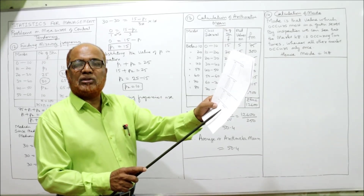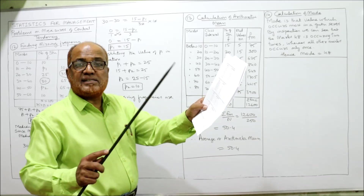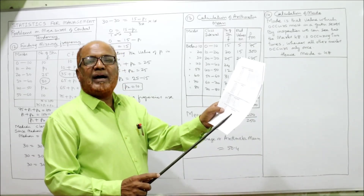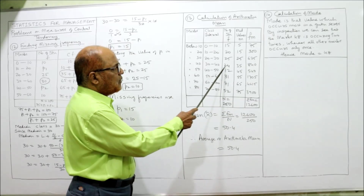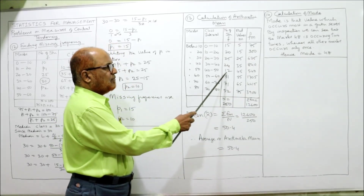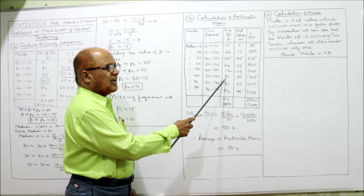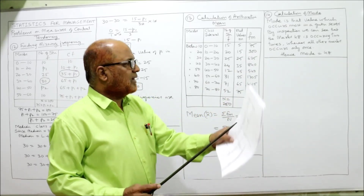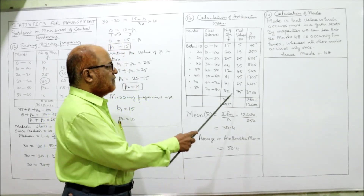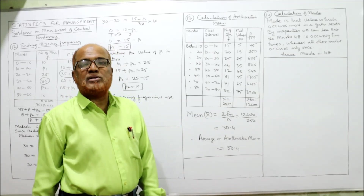Continuing the subtraction to convert cumulative to normal frequency: 60 − 35 = 25, then 84 − 60 = 24, then 96 − 84 = 12, then 127 − 96 = 31, then 198 − 127 = 71, and finally 250 − 198 = 52. The total of all frequencies adds up to 250, which matches the last cf value given.